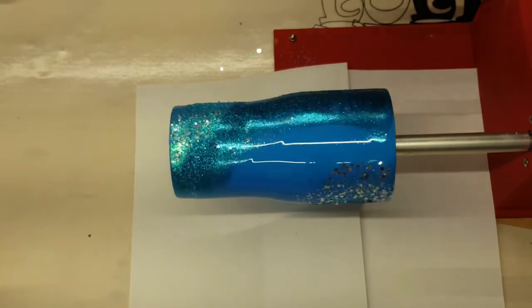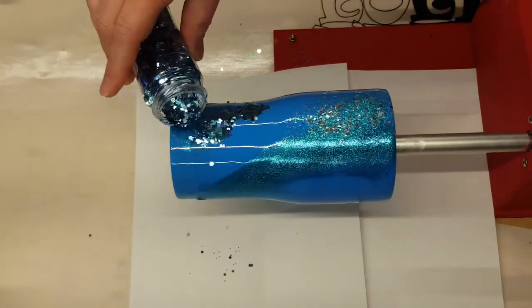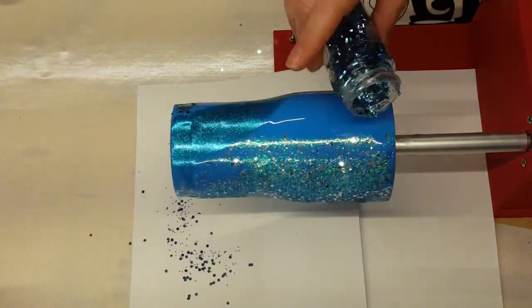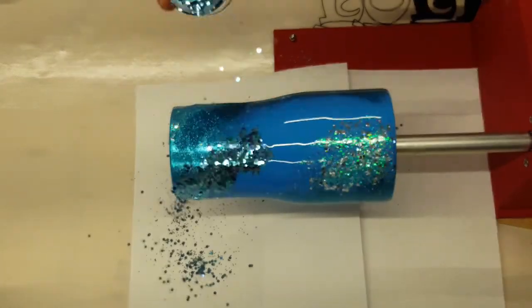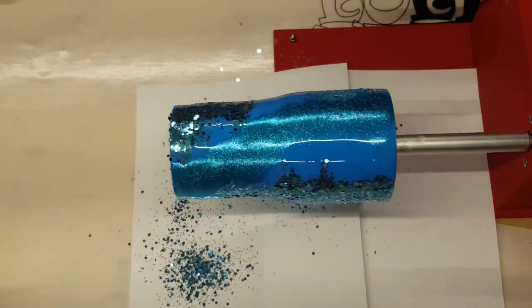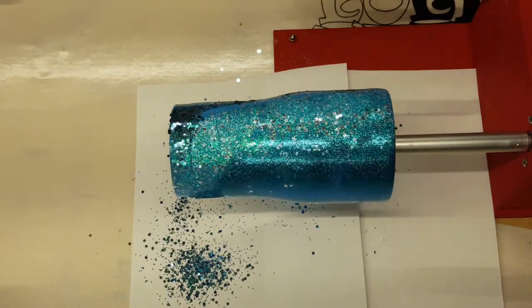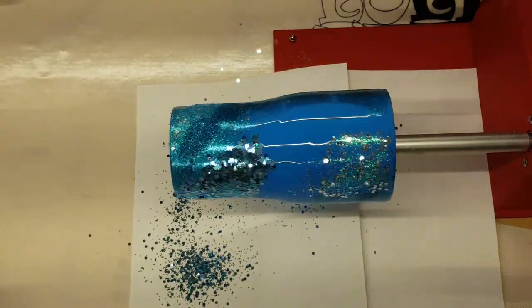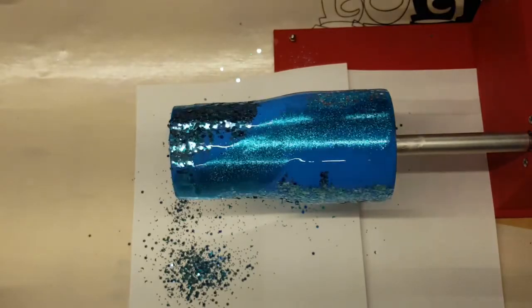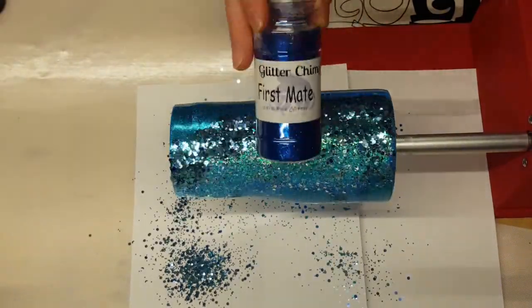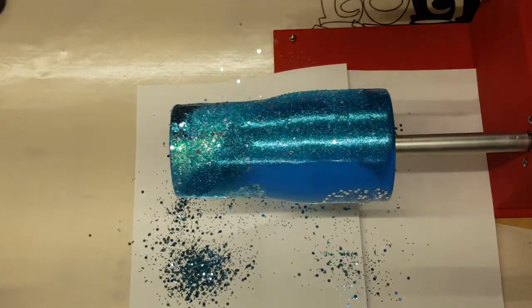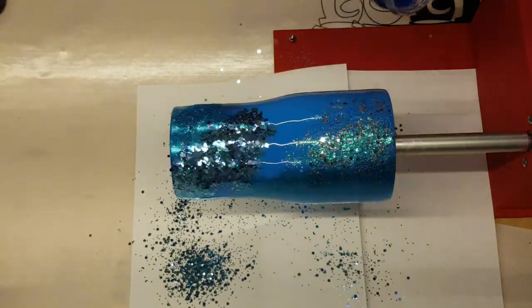So once I have all of this laid down, my cup will be completely covered with the glitter. I'm going to leave this spinning until the epoxy is cured. And then I will come back and do a clear coat of epoxy on top of this glitter just to seal that glitter in.